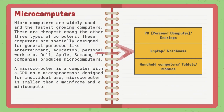Microcomputers are widely used and the fastest growing computers. These are the cheapest among the other three types of computers and are specially designed for general purposes like entertainment, education, and personal work. Companies such as Apple, Dell, and Samsung produce microcomputers. A microcomputer is a computer with a CPU as a microprocessor, designed for individual use. Microcomputers are smaller than mainframe and mini computers.